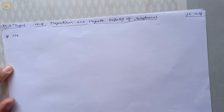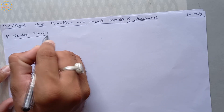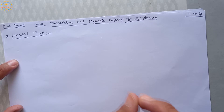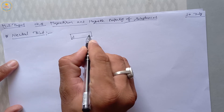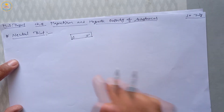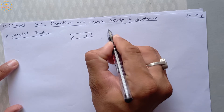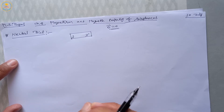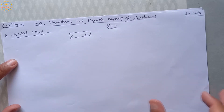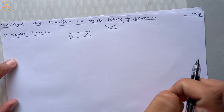This new property is the neutral point. What is a neutral point? Simply, the points around a bar magnet — suppose this is a bar magnet with a north pole and a south pole — at which magnetic field intensity is equal to zero, these points are called neutral points.